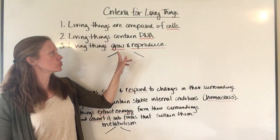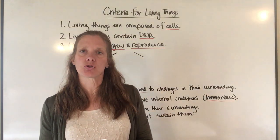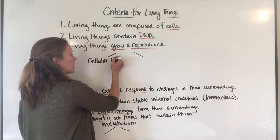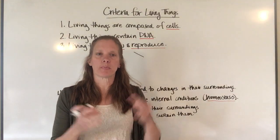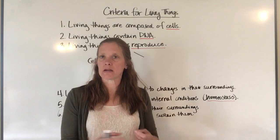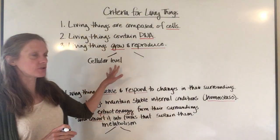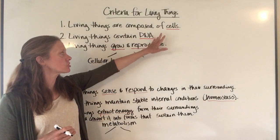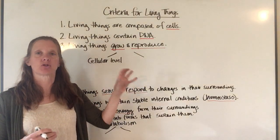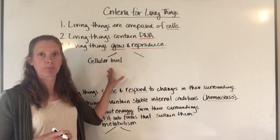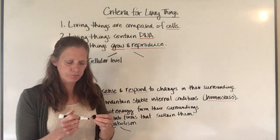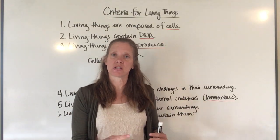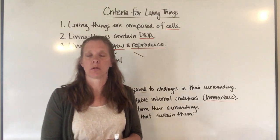DNA gives instructions for the remaining criteria, starting with growth and reproduction. You can think about this on the cellular level: cells can grow bigger, divide, and make new cells. Each time a cell divides, the new cell gets DNA from the original. When humans first form in the womb, they start with one cell, and those cells keep dividing, passing DNA to each additional cell formed.